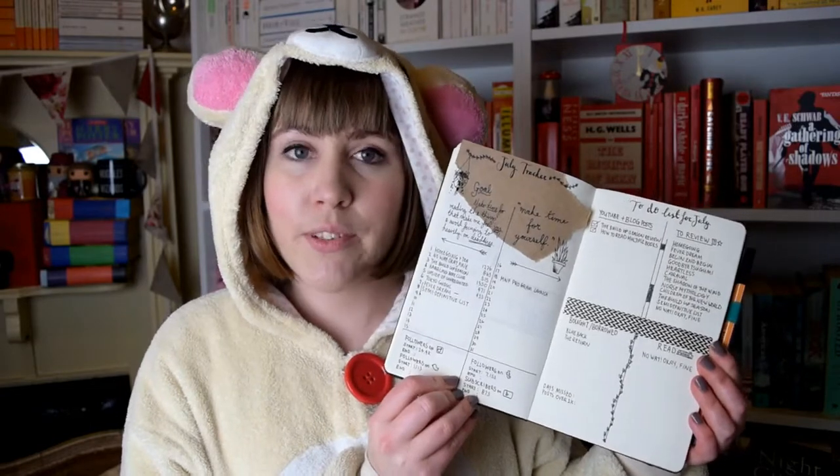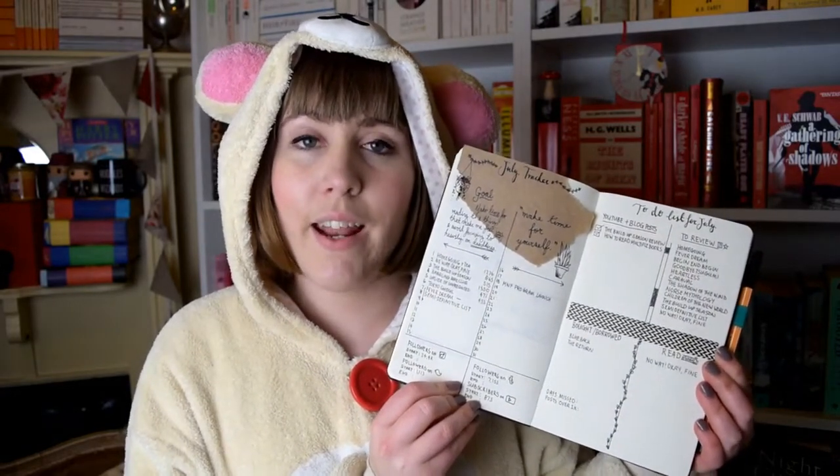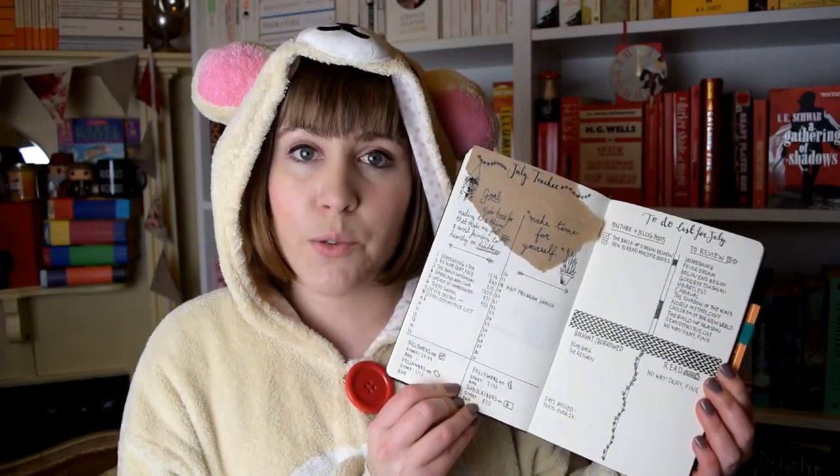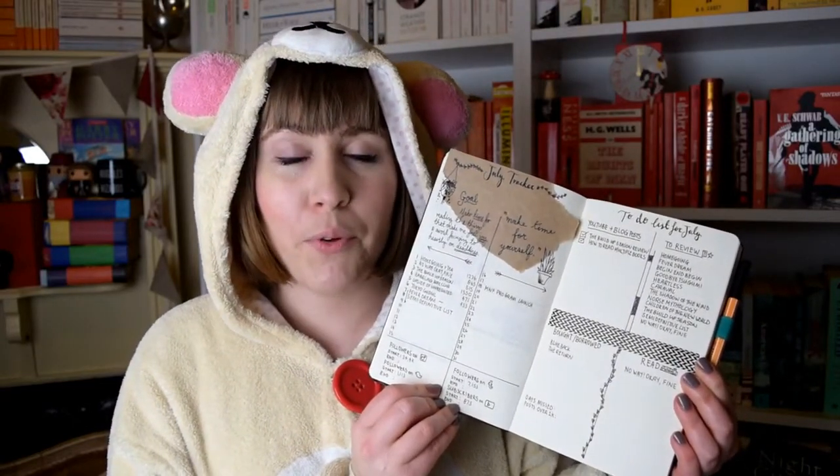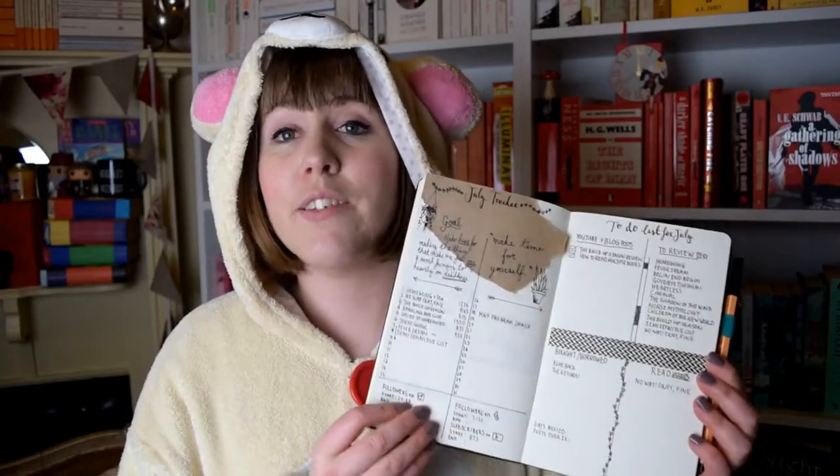This is what it looks like. I use a Moleskine journal in a basic size and I use dots instead of lines or squares. I just really prefer the dots, and if you've seen my travel journal flip through, this is a very similar book though this is actually the hardcover version rather than the softcover.